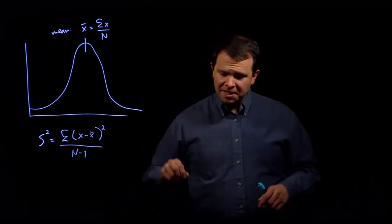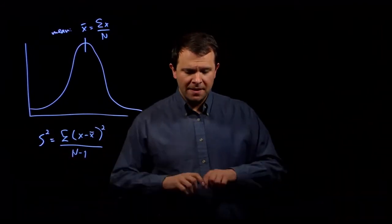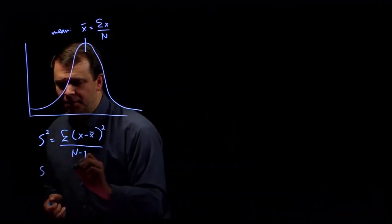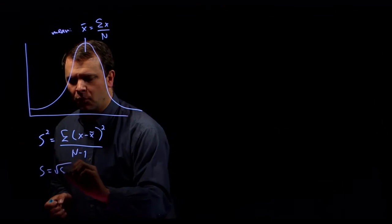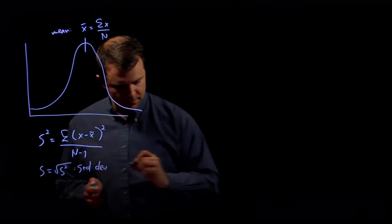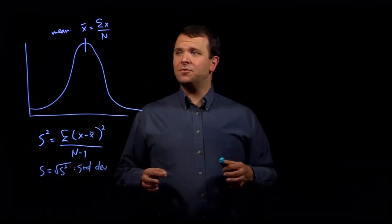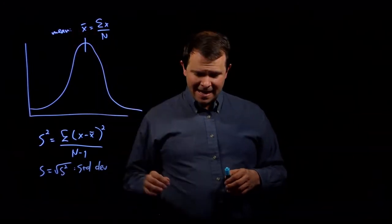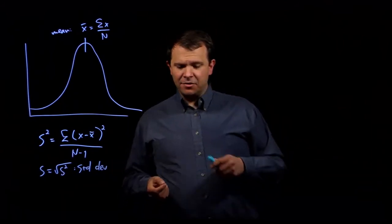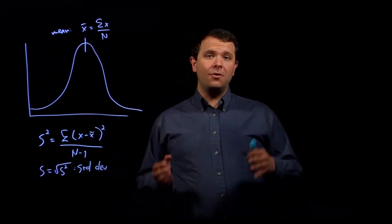Finally, there's a closely related value that is perhaps even more useful than just the variance. And that's the standard deviation, which is just s. So this is the square root of the variance. And it's useful because the standard deviation is actually in the same units as the mean. So if we're measuring height in inches, then the units of mean are inches and the units of the standard deviation are also inches.